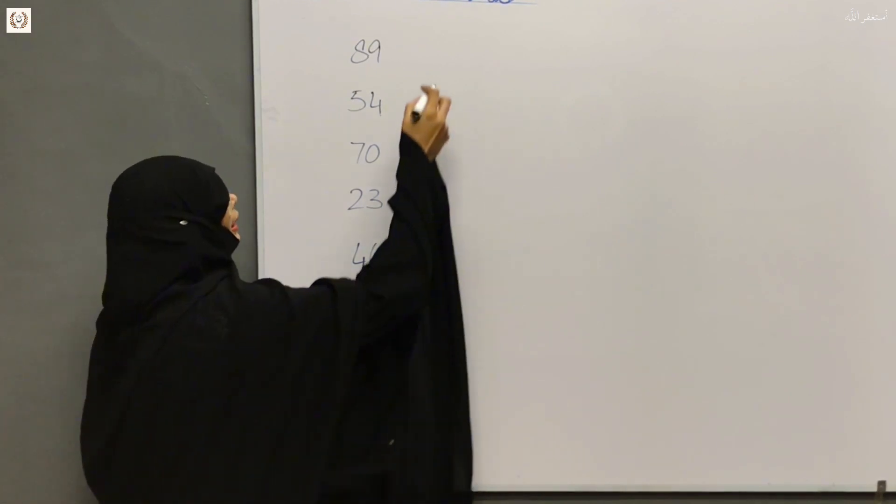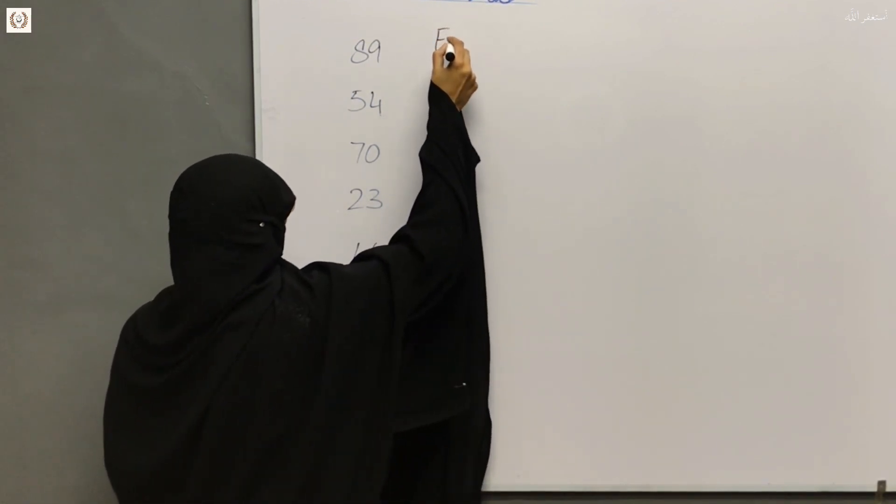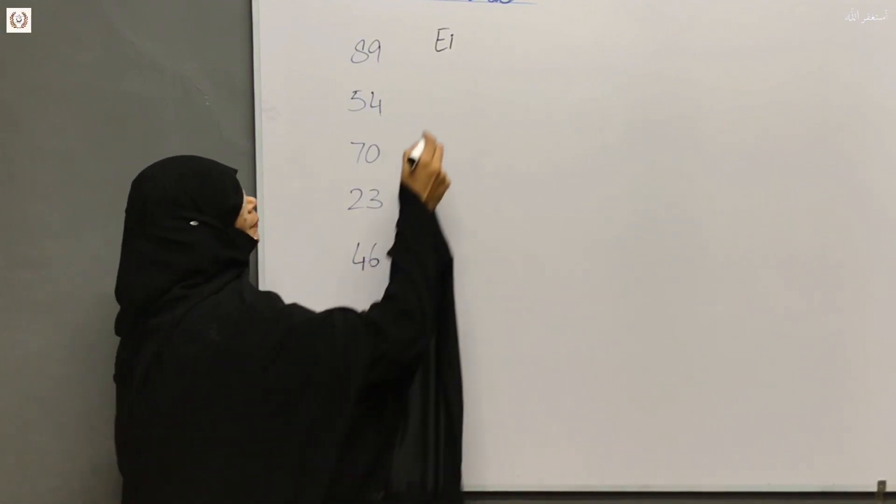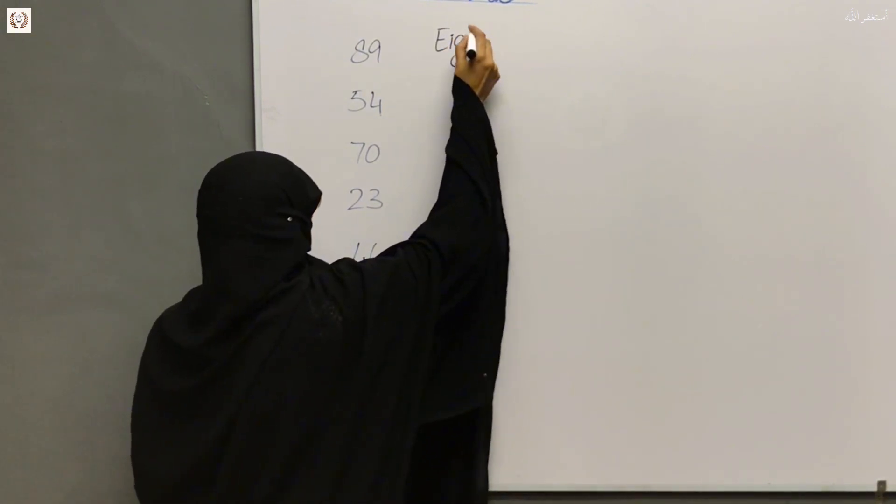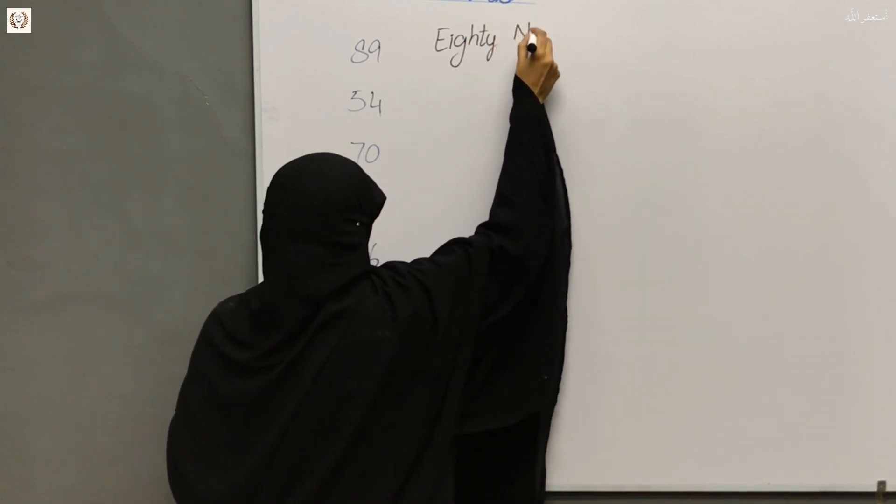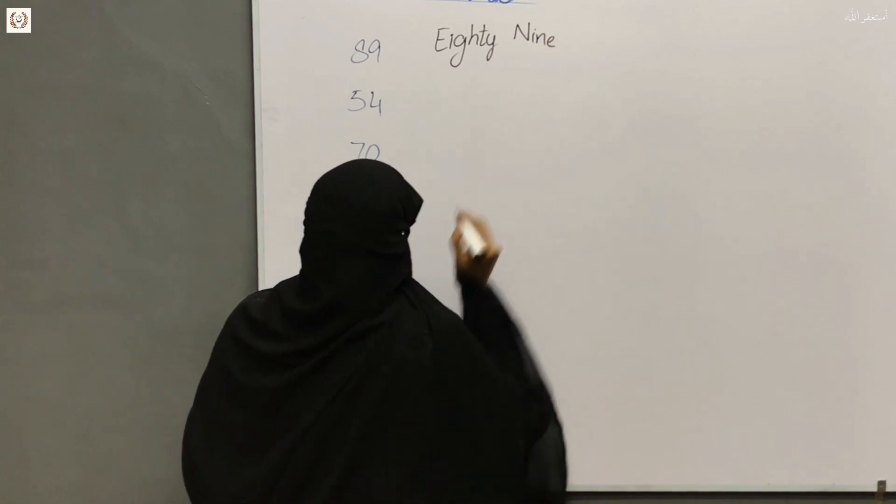89. Now we have written here 89. What is the spelling? It is very easy. Eighty: E-I-G-H-T-Y. Nine: N-I-N-E. 89.